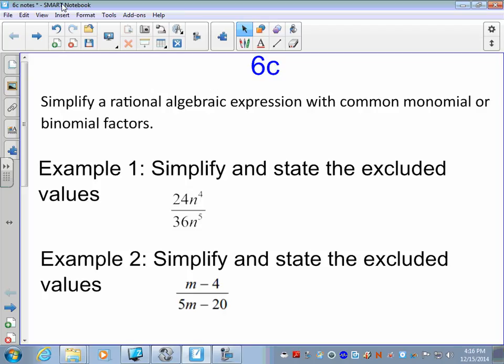To simplify, here we have a monomial 24n to the 4th divided by another monomial 36n to the 5th. The very first thing I would like you to do, if you can factor, factor the numerator and denominator. Well, factors just mean multiplication, which we already have here. It's 24 times n to the 4th, 36 times n to the 5th. We cannot break this down any further. So now the first step was to factor, if possible.